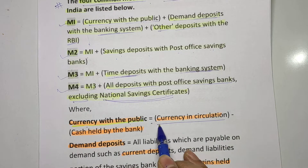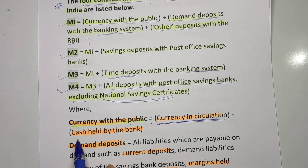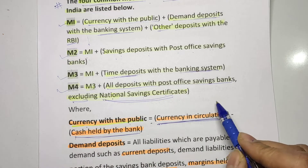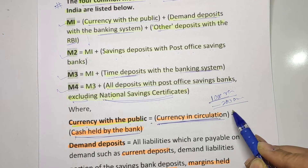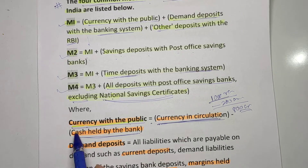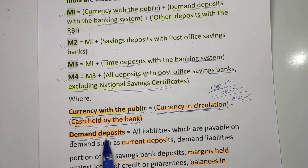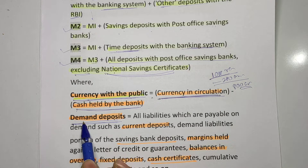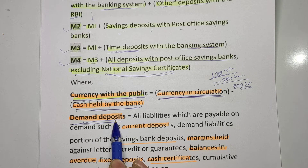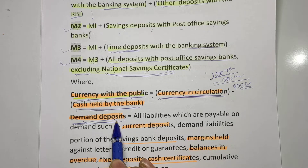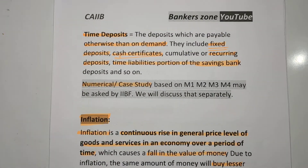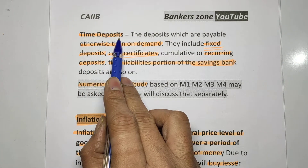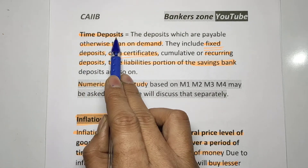Currency with the public is nothing but the total currency in circulation minus the cash held by the bank. For example, if there is 1,000 crore in the market and the currency held with banks is 200 crore, then 800 crore is your currency with the public. Demand deposit is the deposit payable on demand — for example, savings and current account balances are demand deposits.